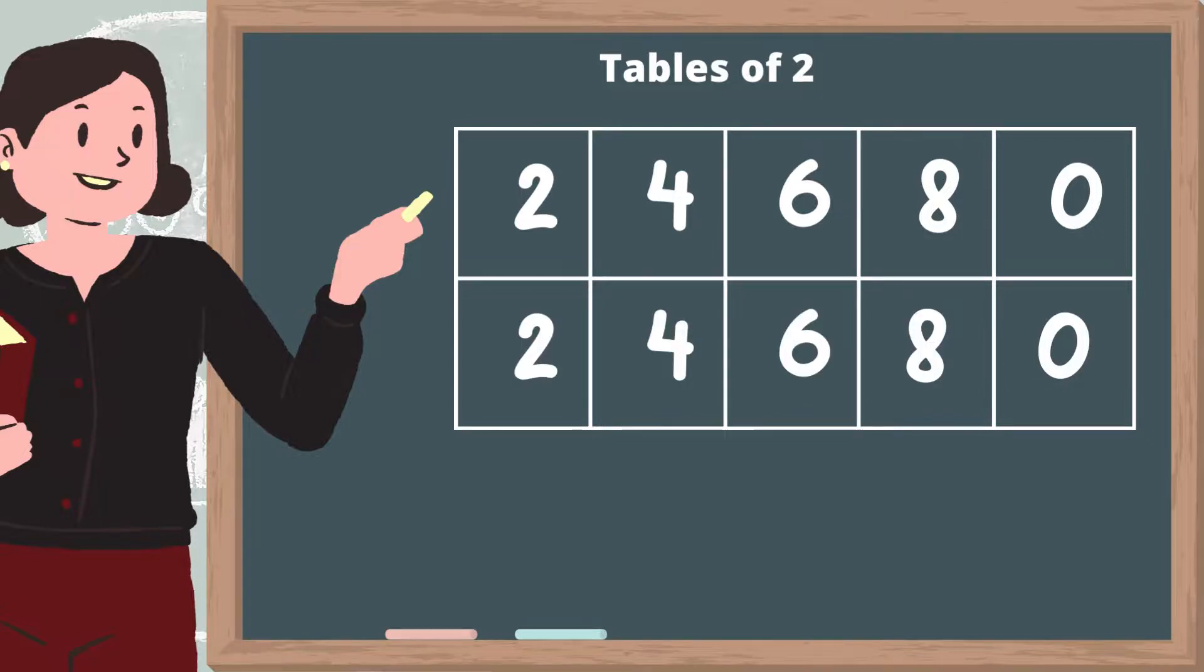Then do the same to the bottom row by writing numbers two, four, six, eight and add zero at the end.